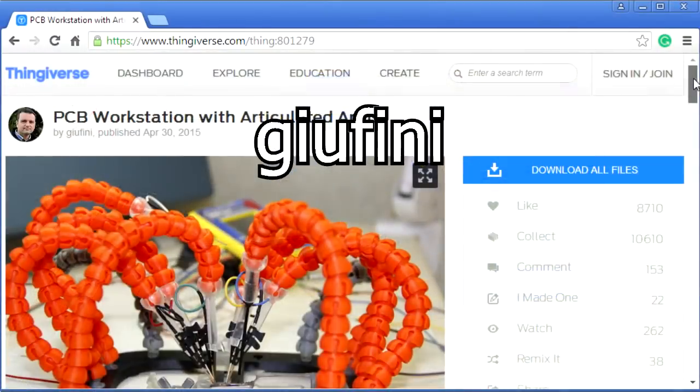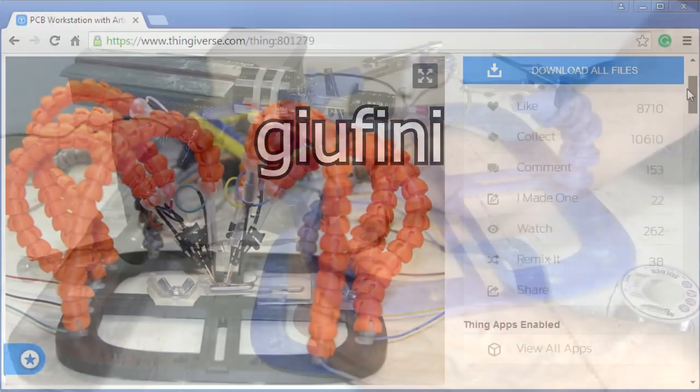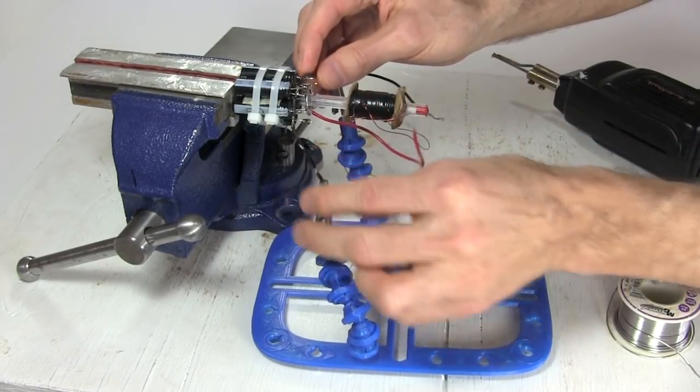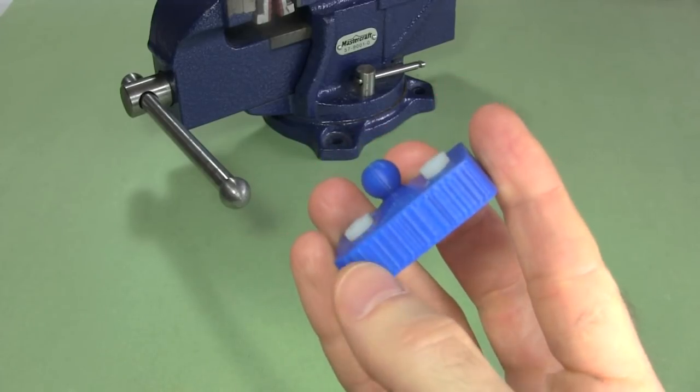The base comes from Thingiverse user Giu Finney, but often I'm holding something heavy in my vise and soldering to that. Instead of trying to get the helping hands in there, I came up with this more compact magnetic holder.